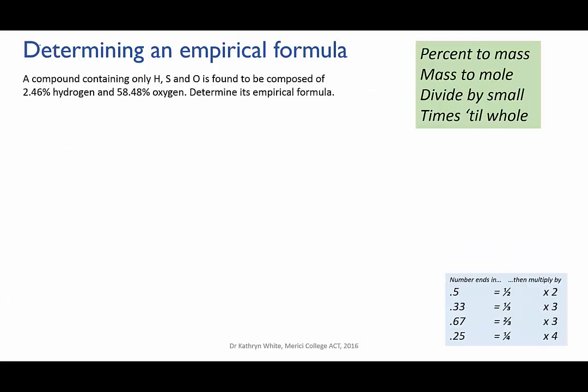Let's try another. A compound containing only hydrogen, sulfur and oxygen is found to be composed of 2.46% hydrogen and 58.48% oxygen. Determine its empirical formula.